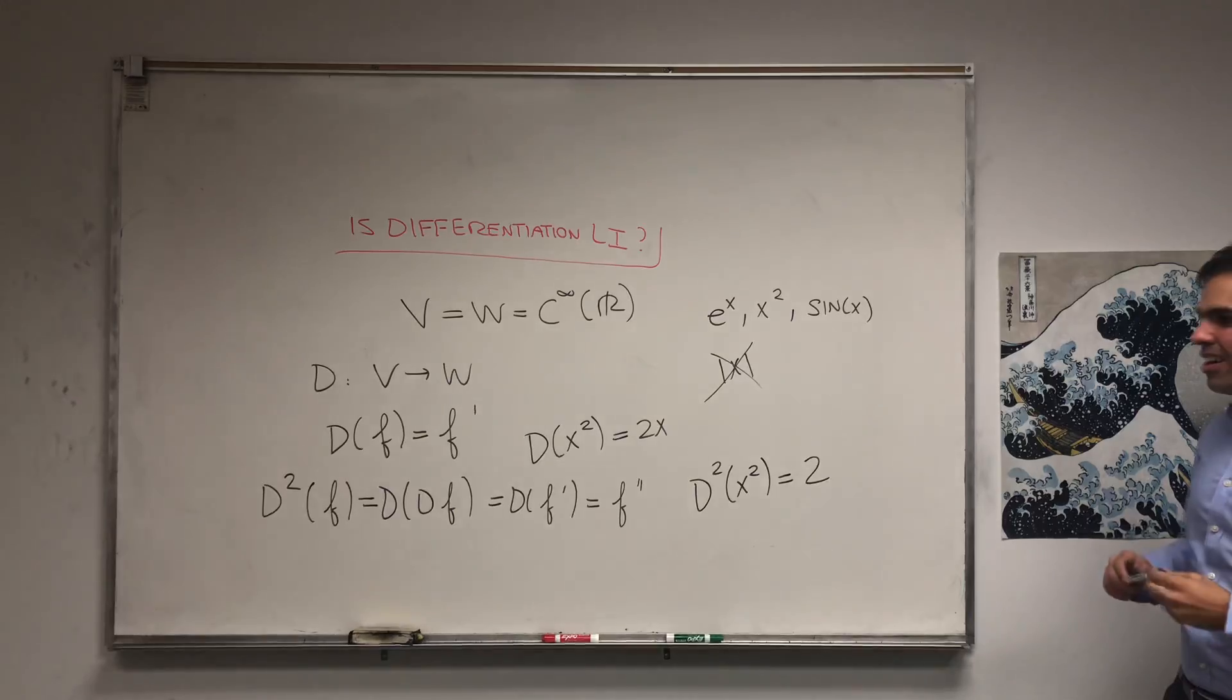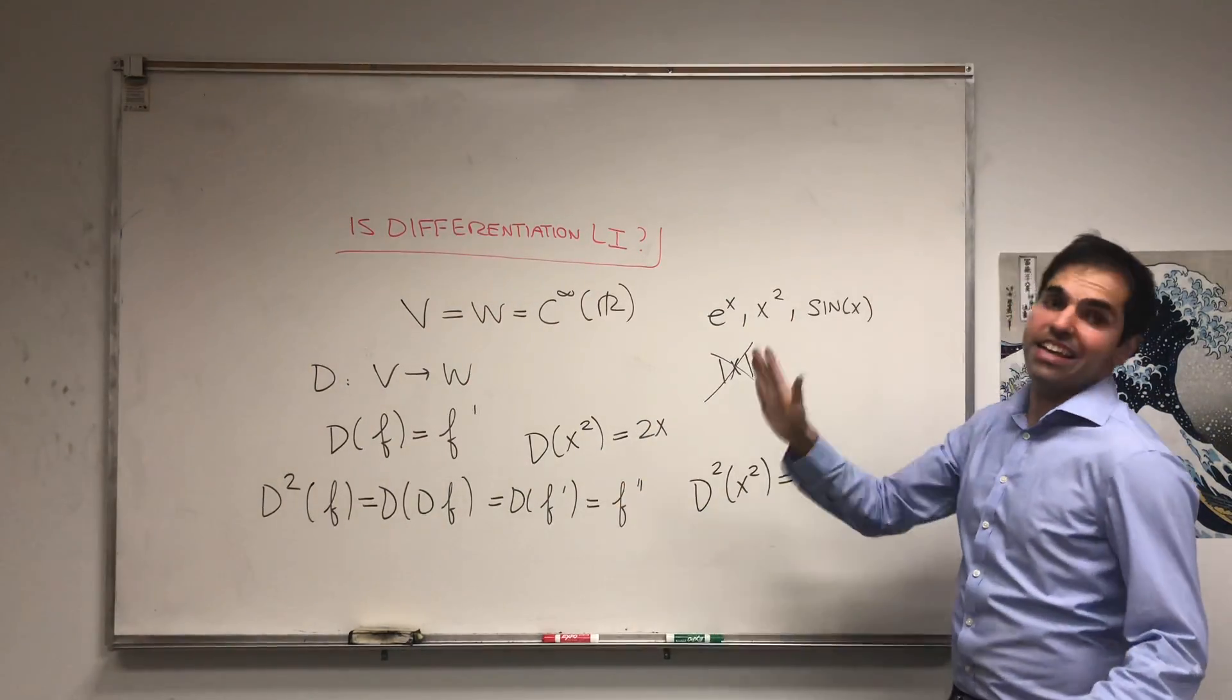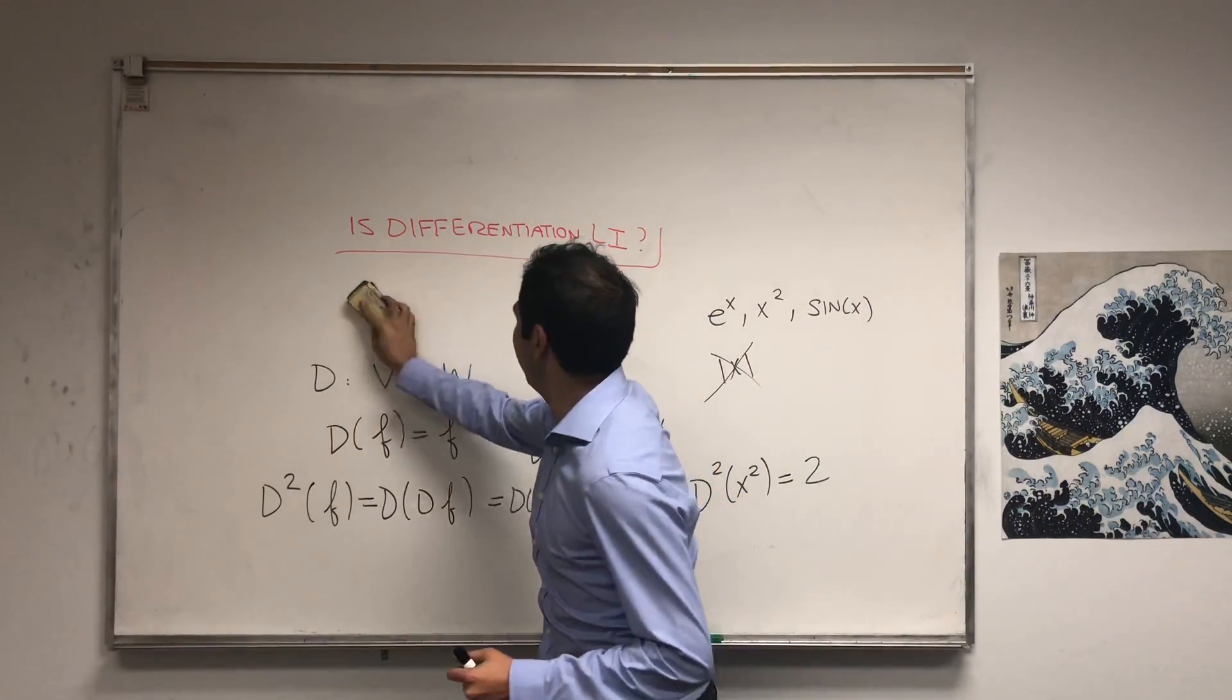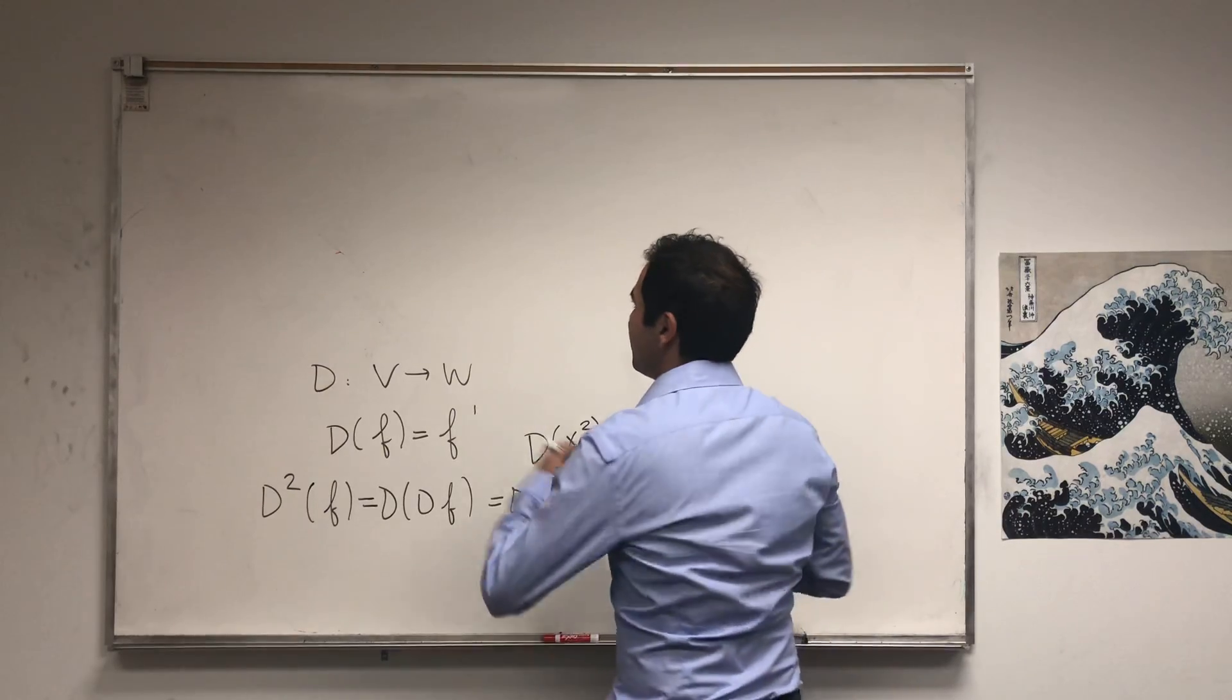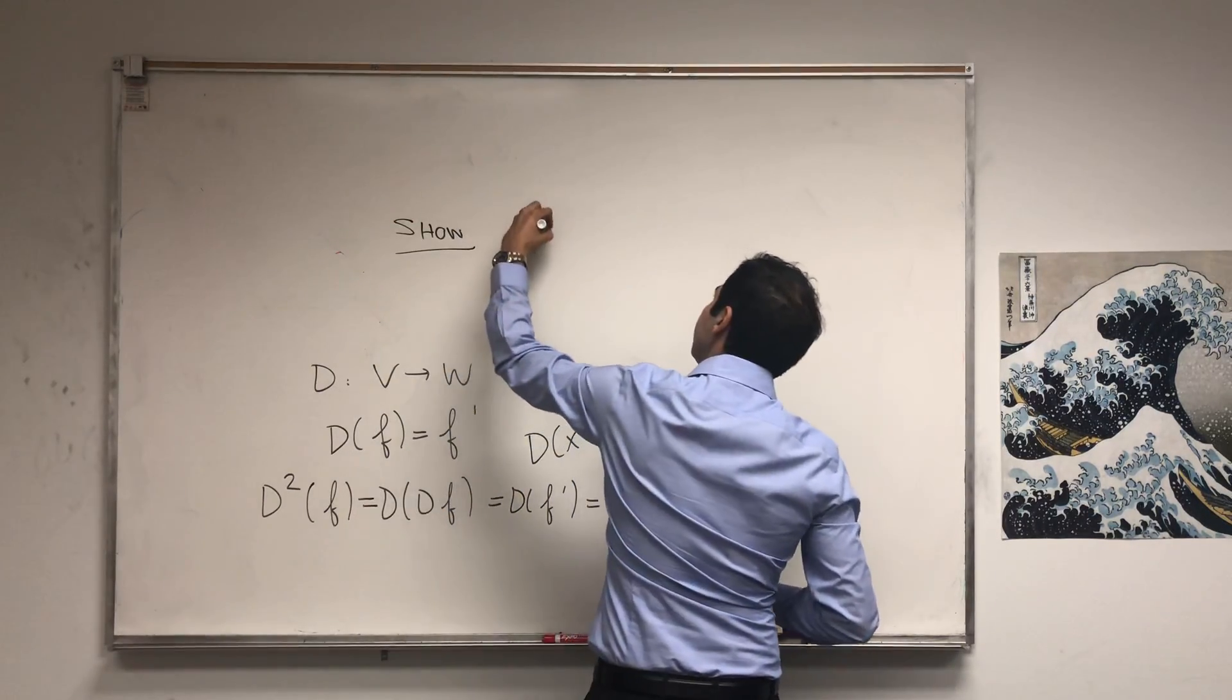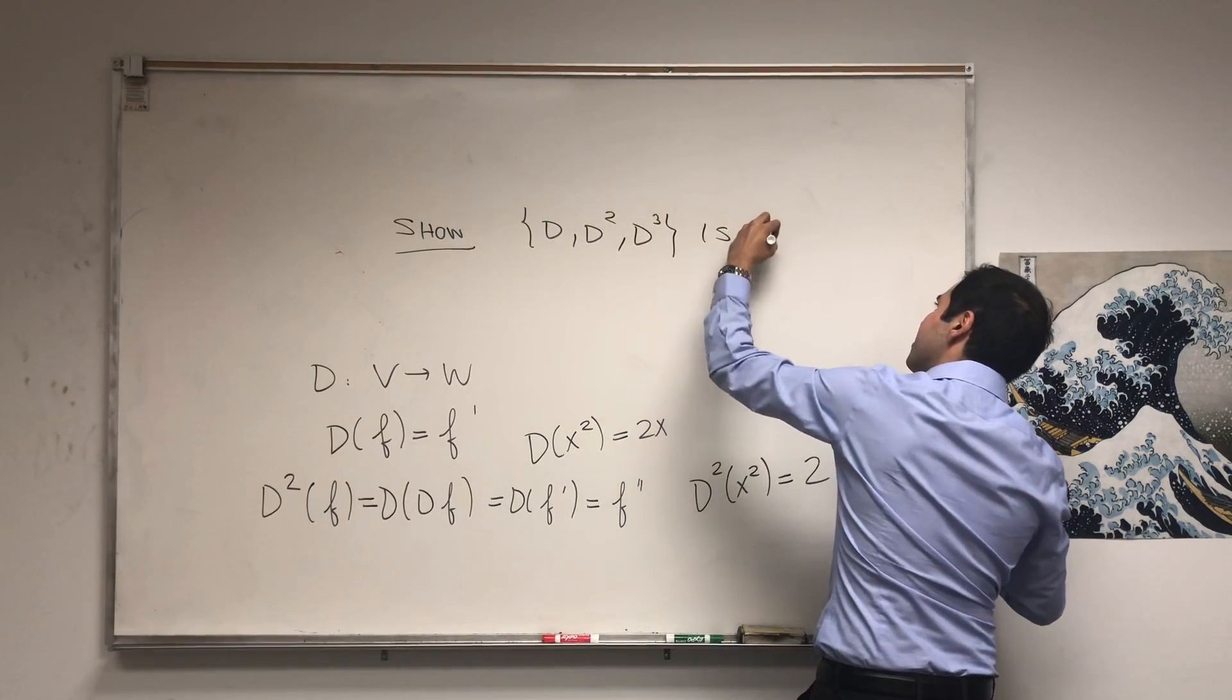And what do I want to show? I want to show that D, D², and D³ are linearly independent. So in that sense, differentiation is linearly independent.